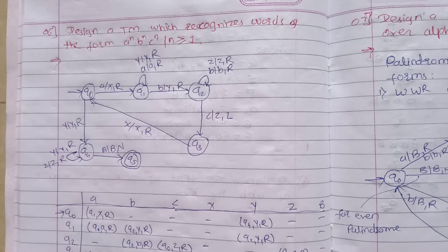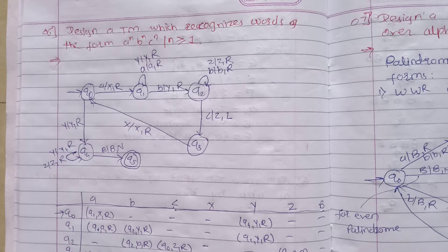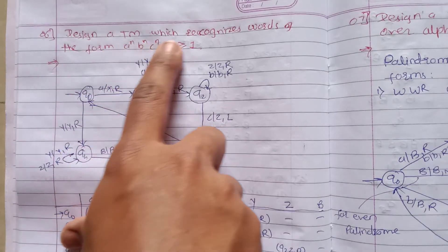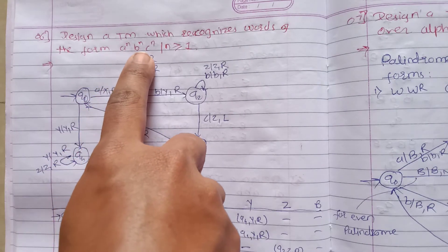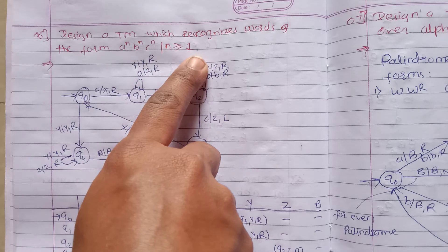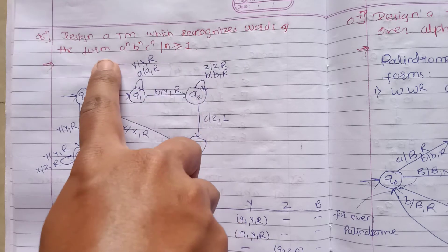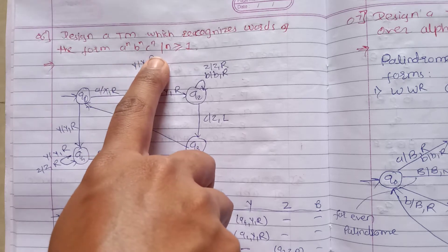In this lecture we are going to start with another example based on Turing machine. The question is: design a Turing machine which recognizes words of the form a raised to power n, b raised to power n, c raised to power n, such that n is greater than or equal to 1. So we have to design the Turing machine for number of a followed by number of b followed by number of c.